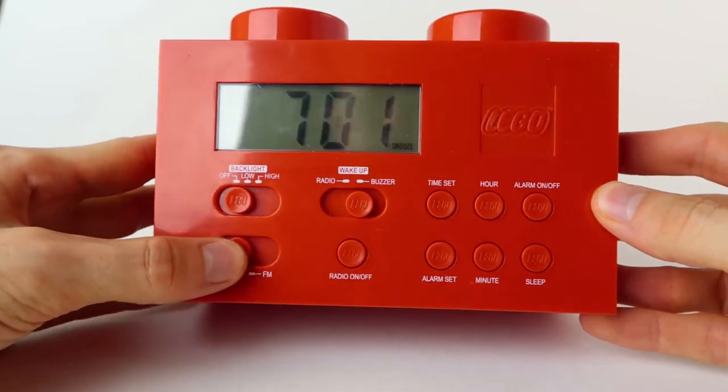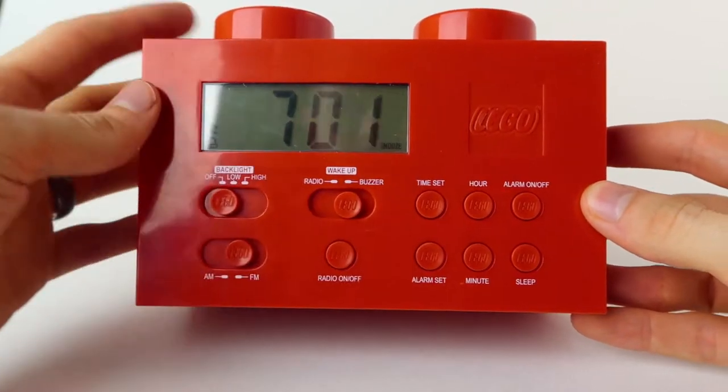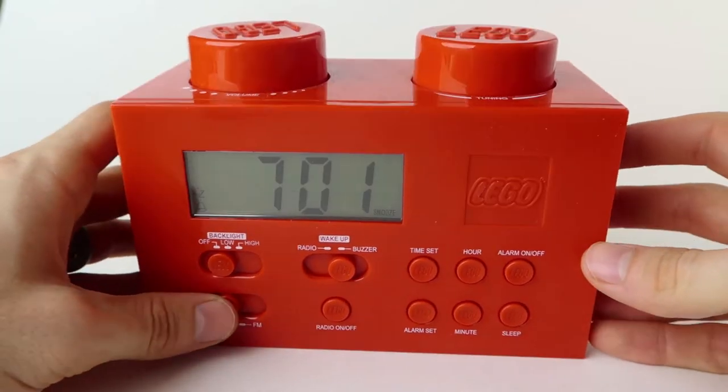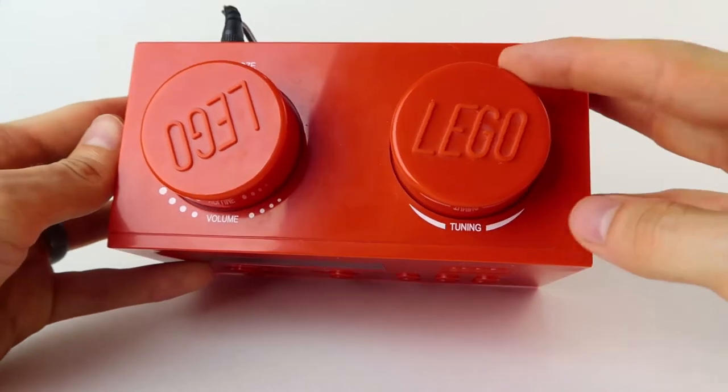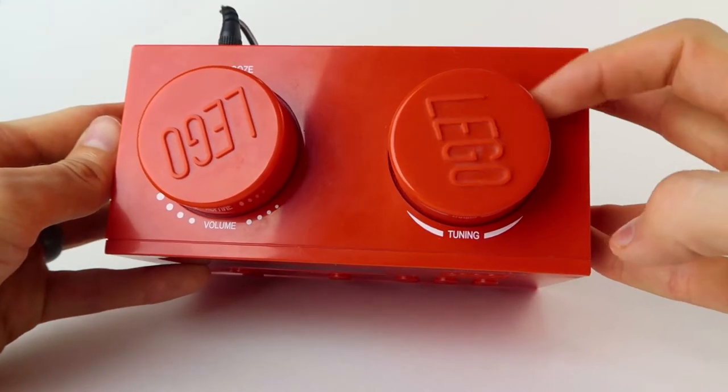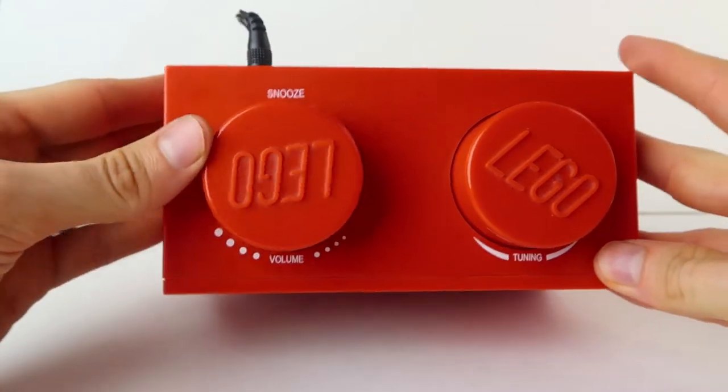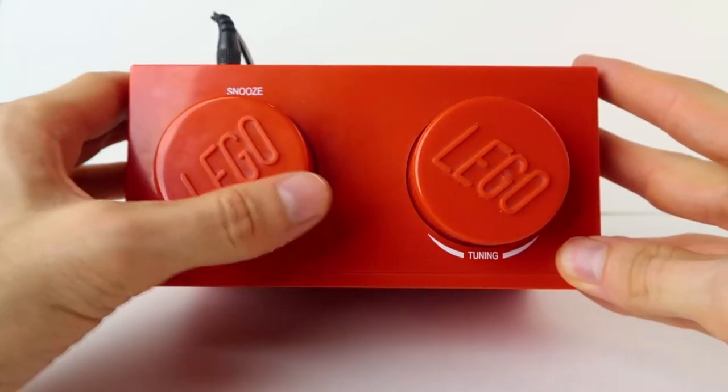And of course it has the AM FM radio and I won't turn it on because there's going to be some copyrighted music on there so I'm not going to do that. But there's the volume knob adjuster here which is this one stud, and the other stud is the snooze volume control for the radio or the volume of the buzzer.